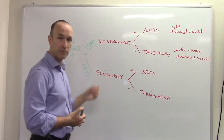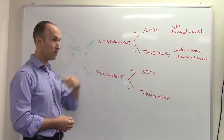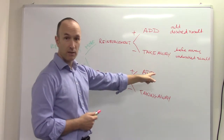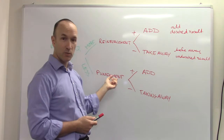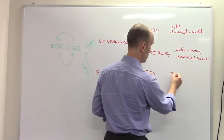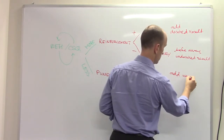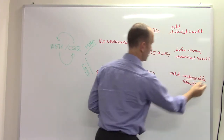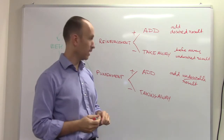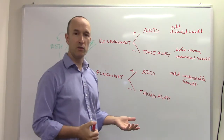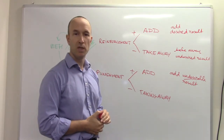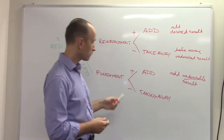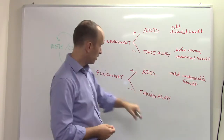When it comes to punishment, we're actually trying to get less of the behavior happening, whether it's for ourselves or to teach someone. You add something — but what would you add in order to make that a punishment so they don't do it again? You add an undesirable result. Classic one: someone does something stupid, you punish them for it. You add a punishment in the hope that you'll see less of that behavior in the future. Most people get that. Negative punishment — that's where it gets tricky again.